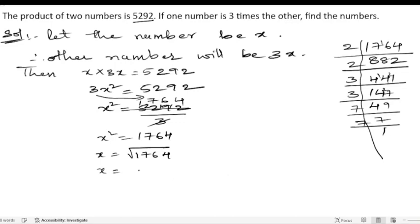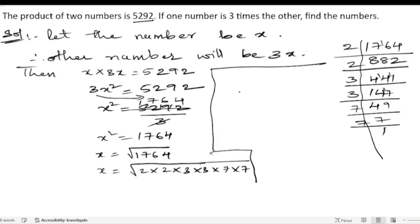So let us write x equals under root of 2 into 2 into 3 into 3 into 7 into 7. So x equals, we will be getting the square root of that. So x equals, whatever the numbers present inside the root, we have to write single time outside the root to get the square root. So 2 into 3 into 7. 2 into 3 is 6, 6 into 7 is 42. x equals 42.